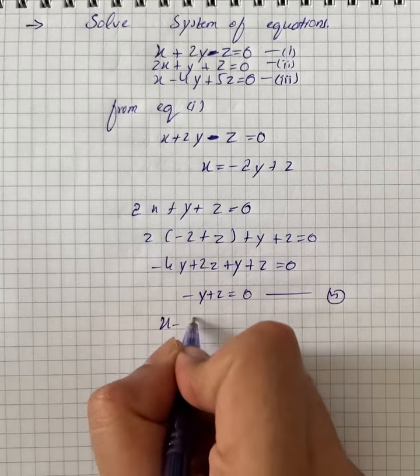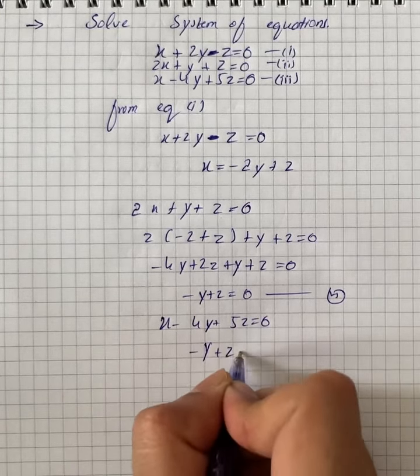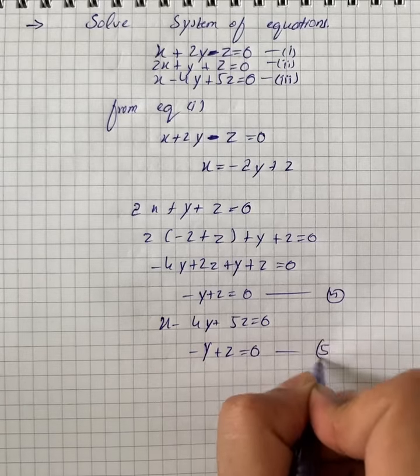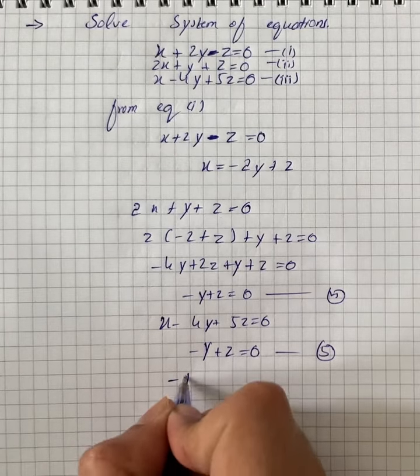In the third step, we will find x minus 4y plus 5z equals 0. That gives us minus y plus z equals 0. Let it be equation number 5.